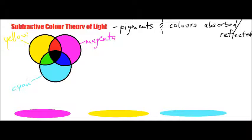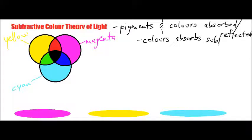According to the subtractive color theory of light, the colors that you actually see in an object depend on the wavelengths that are actually being reflected or absorbed. The colors that are absorbed are what we call being subtracted — the colors that some kind of pigment absorbs are being subtracted from the reflected light that is actually seen by the eye.